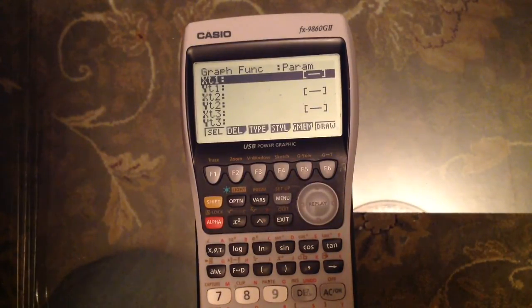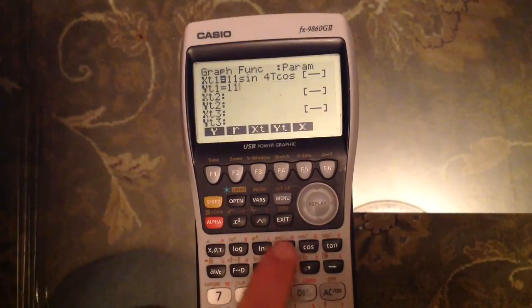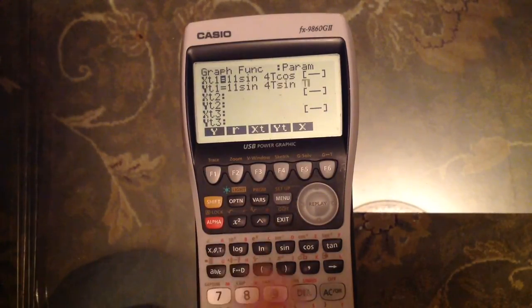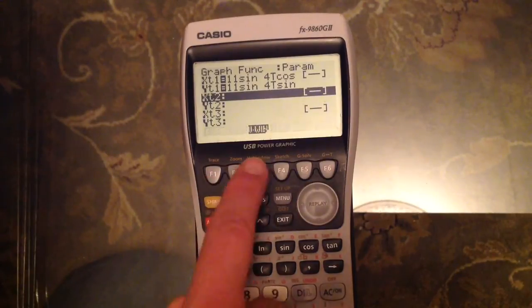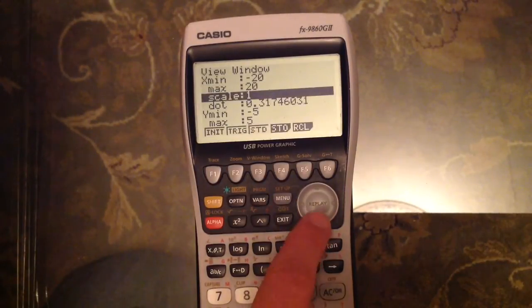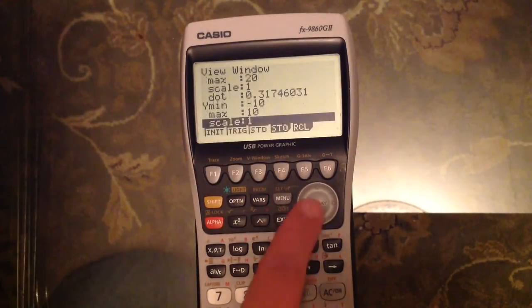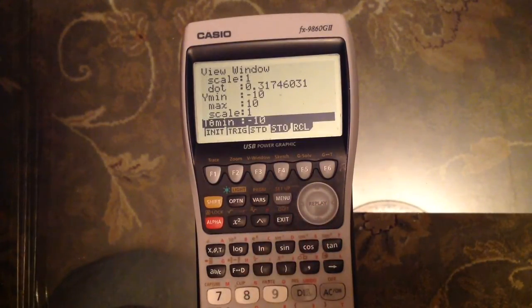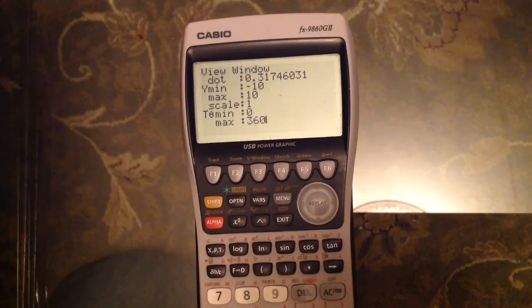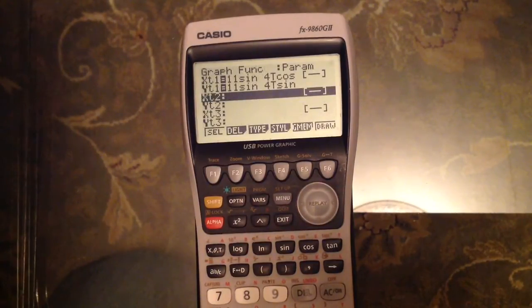When you've worked out how to draw parametric graphs, you can draw some quite interesting patterns. So here's just one for you. X is 11 sine 4T cos T. Y is going to be 11 sine 4T sine T. And I'm going to go straight into the view window. I'm going to have X going from minus 20 to 20, Y going from minus 10 to 10. And I'm in degrees. I want T to go from 0 to 360. And I'm going to do a pitch of 3, so it's just going to calculate every 3 degrees. Storing that in and drawing the picture.